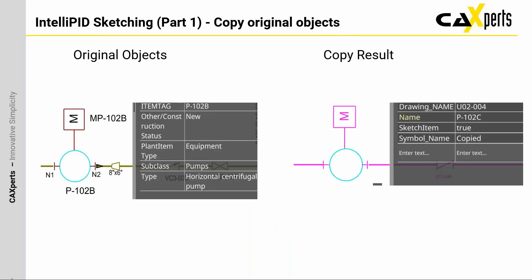As I already mentioned, you can also copy original objects. For instance, if you need a pump with nozzles and motor, you can click on the components in the source data and use a copy function which will copy them to sketch objects. In that case, the symbol will be called 'copied' and the property sketch item will be set to true, so that you know you are now using a new sketch item.